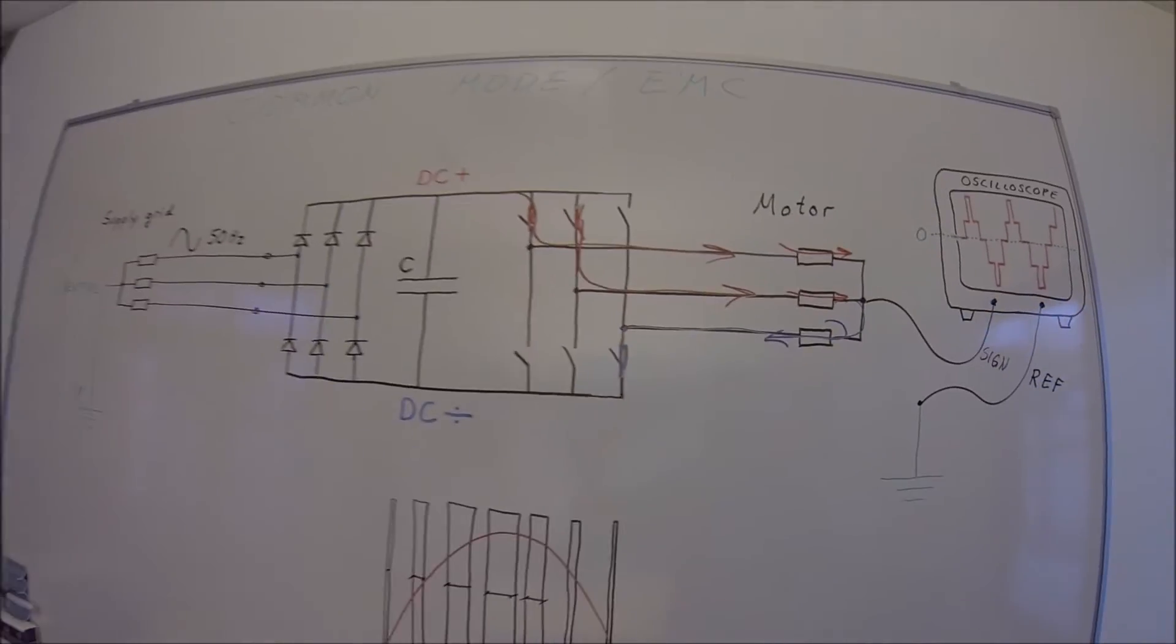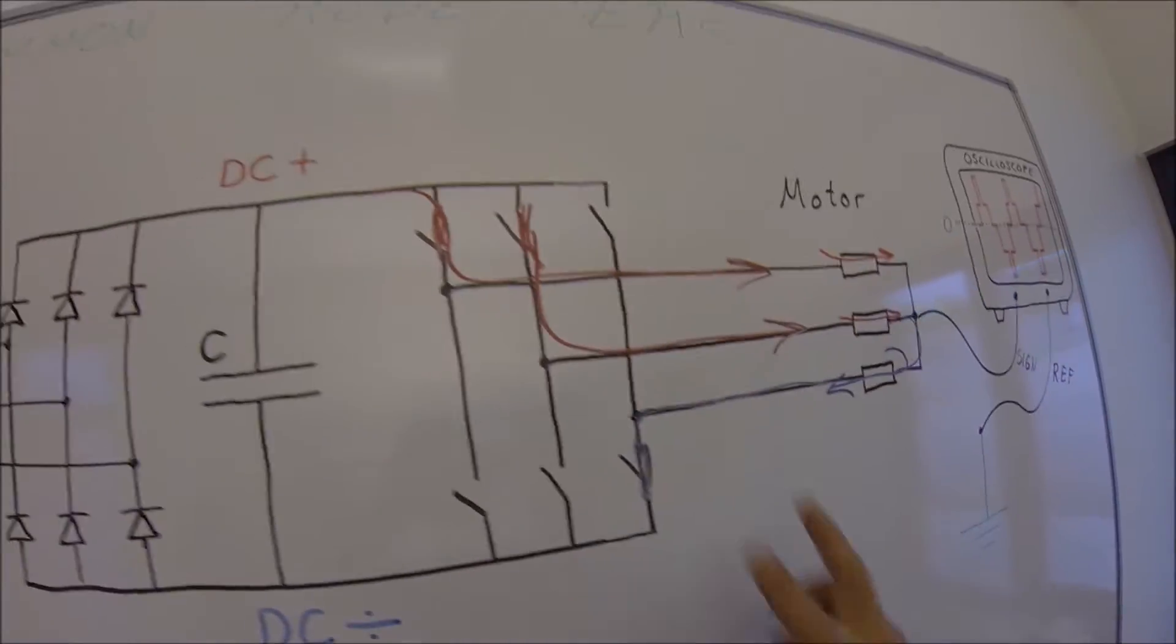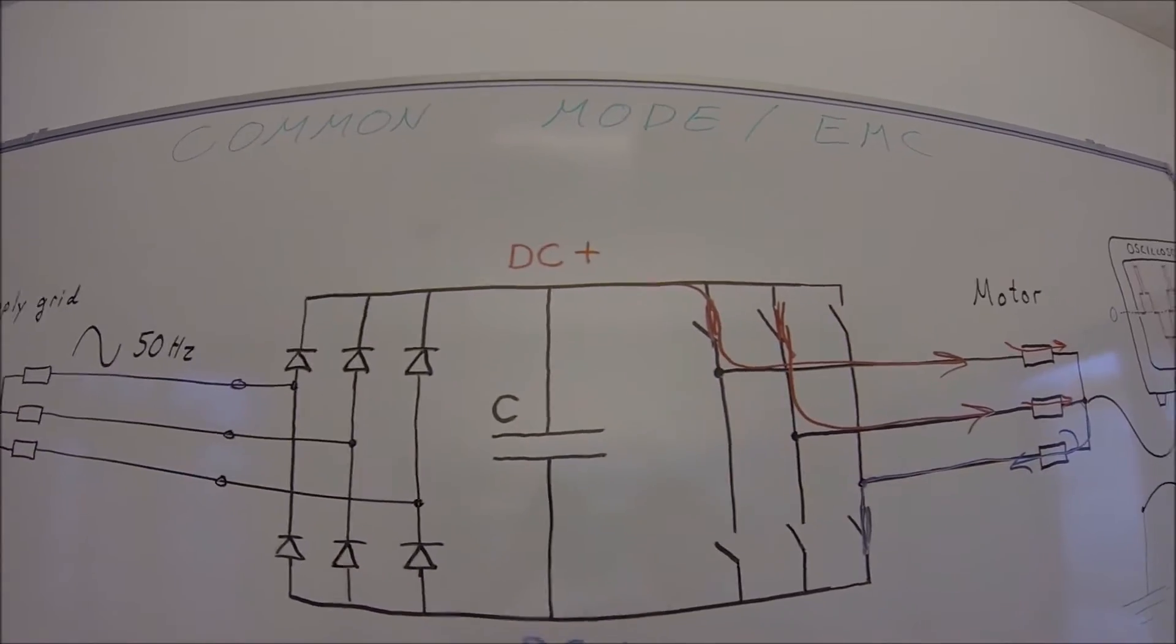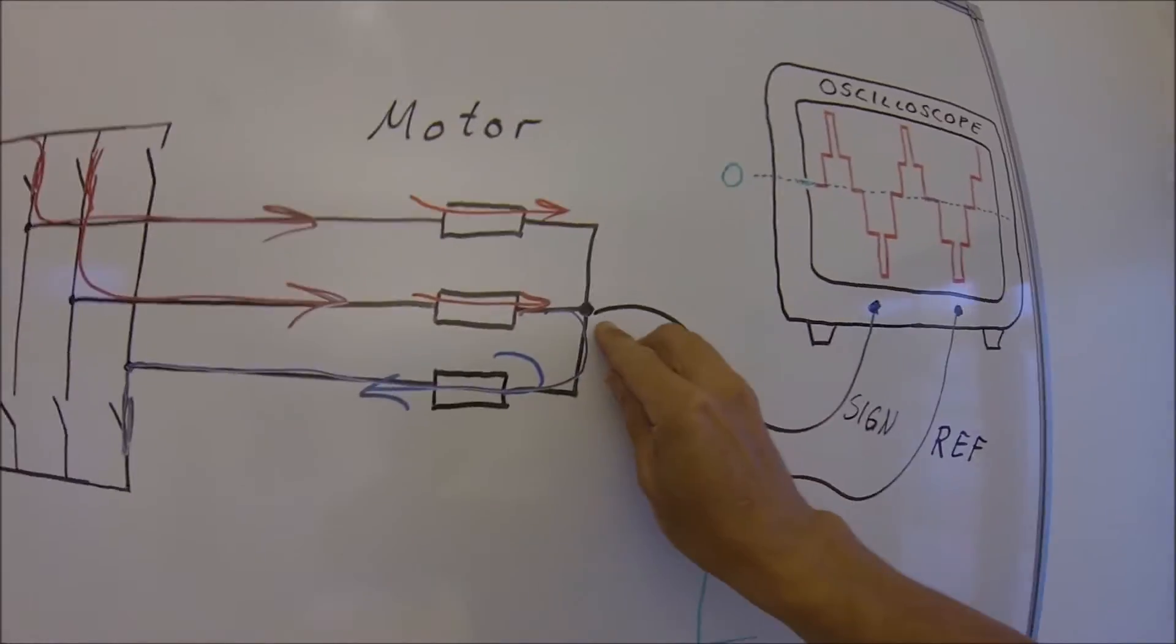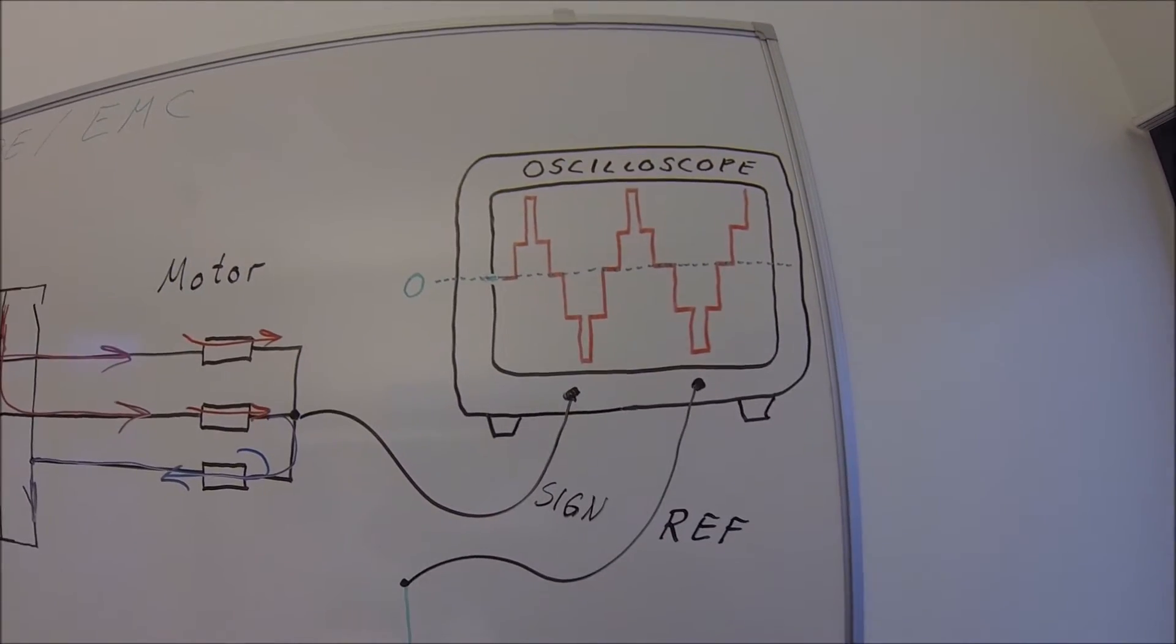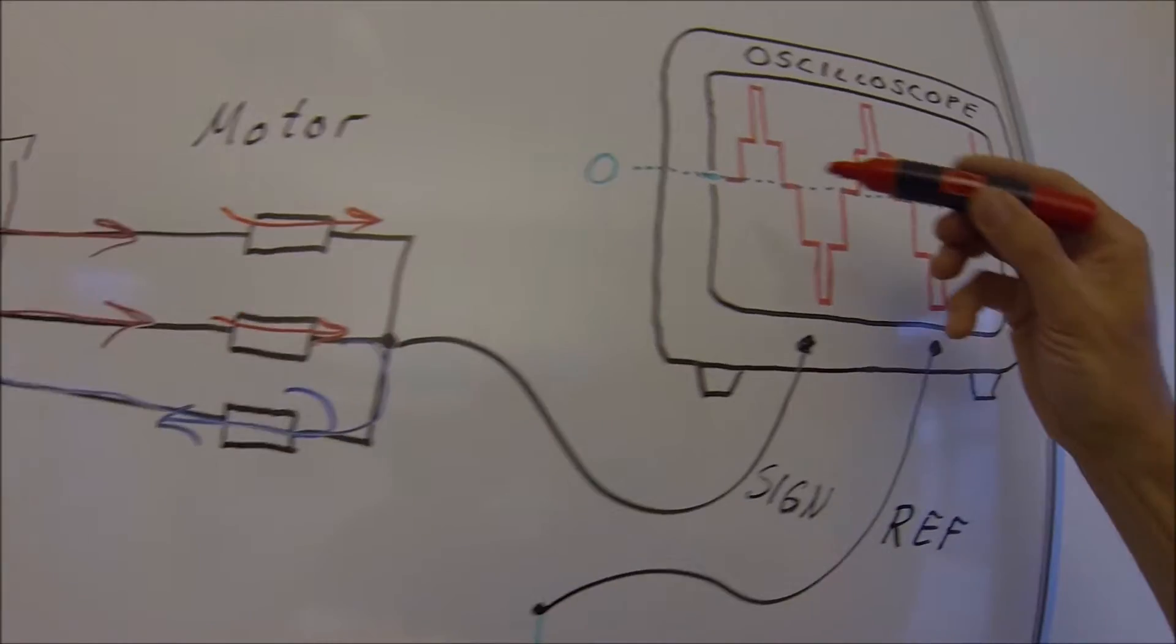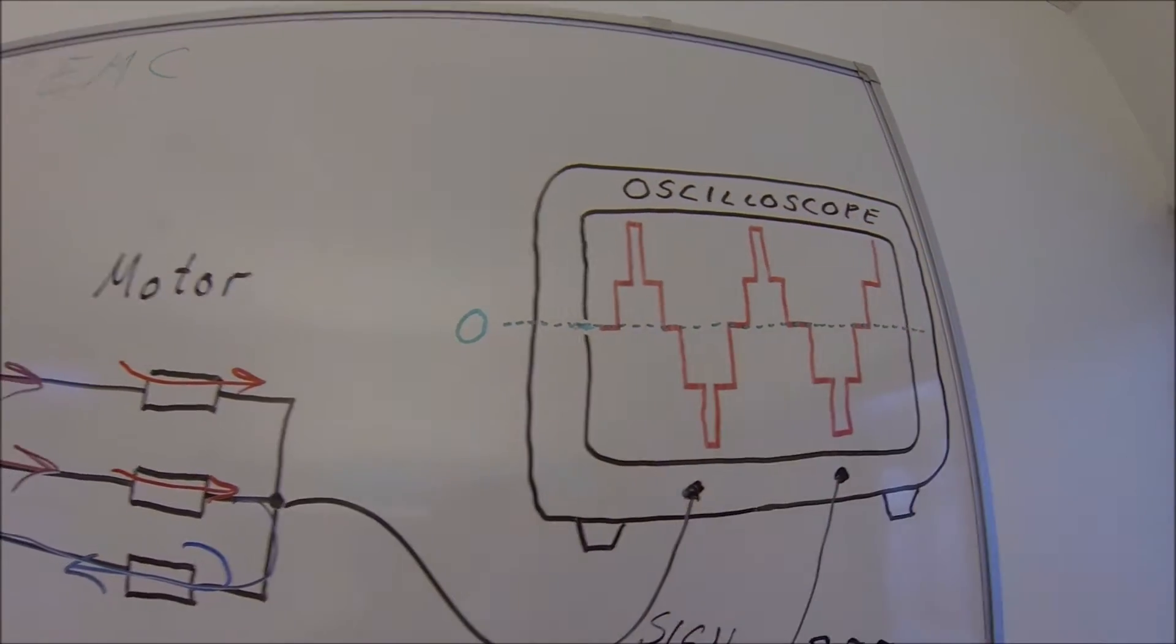And here we already can identify the problem because what we have done now is connecting two transistors to the plus side and only one to the minus side. What happened with this neutral point in the motor then? If you look at it in an oscilloscope, we will see that we actually have lifted the star point up and this can be quite high.